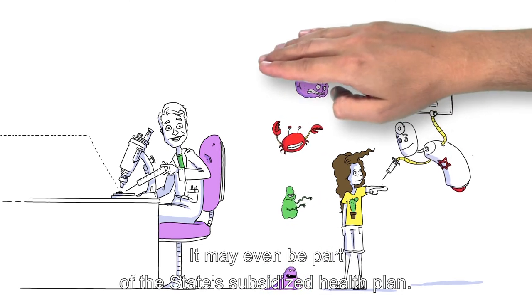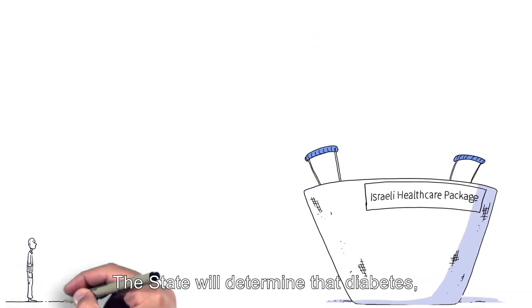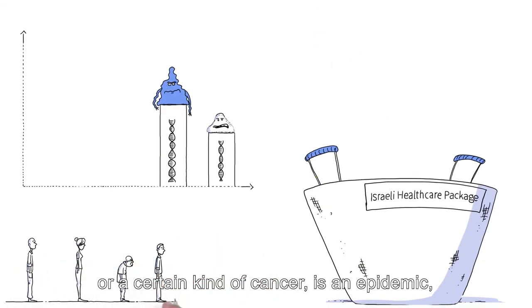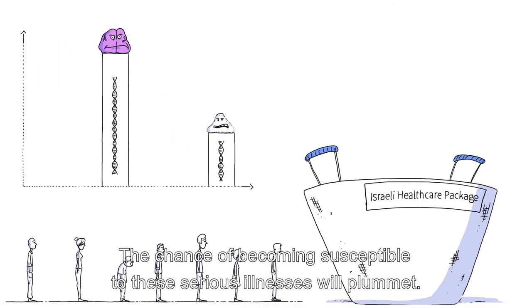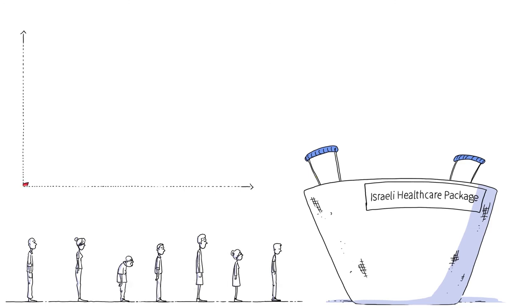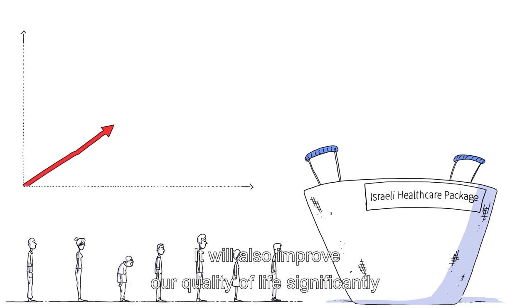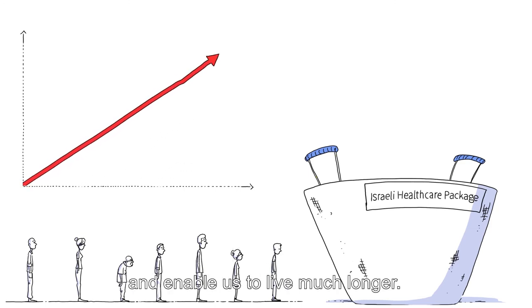It may even be part of the state's subsidized health plan. The state will determine that diabetes, or a certain kind of cancer, is an epidemic. And poof! The chance of becoming susceptible to these serious illnesses will plummet. It will also improve our quality of life significantly, and enable us to live much longer.